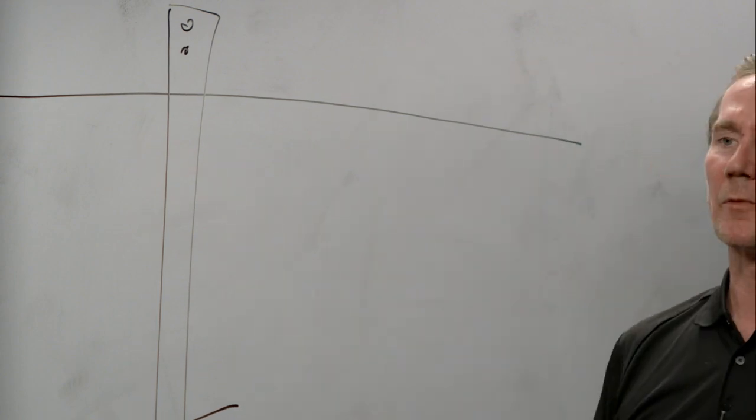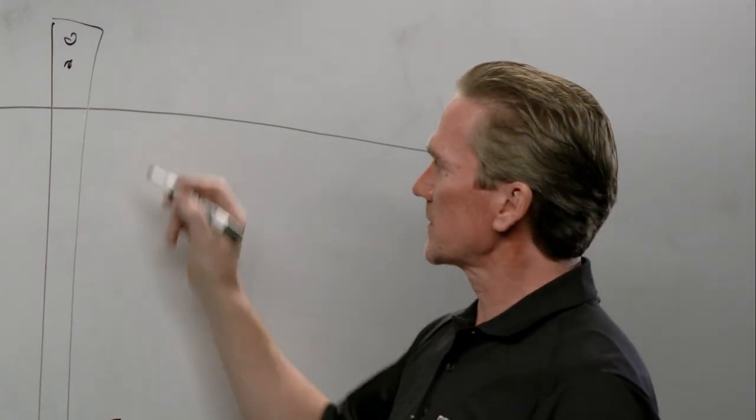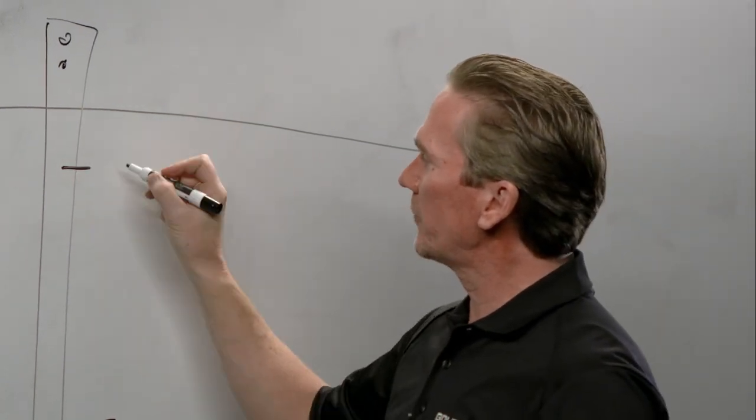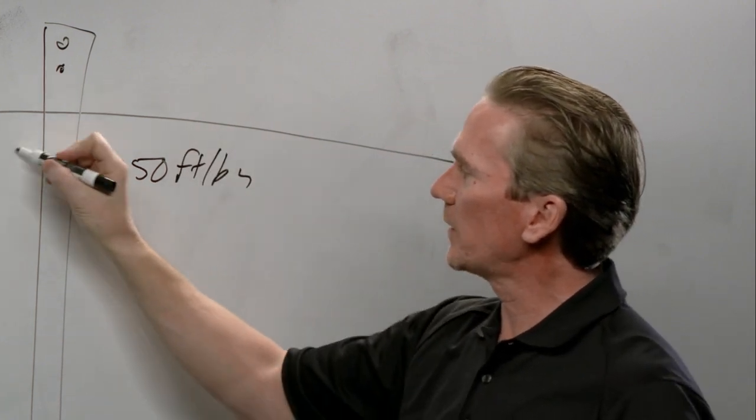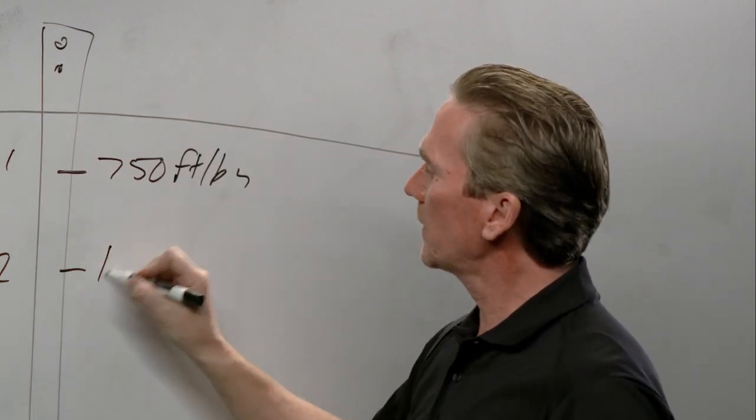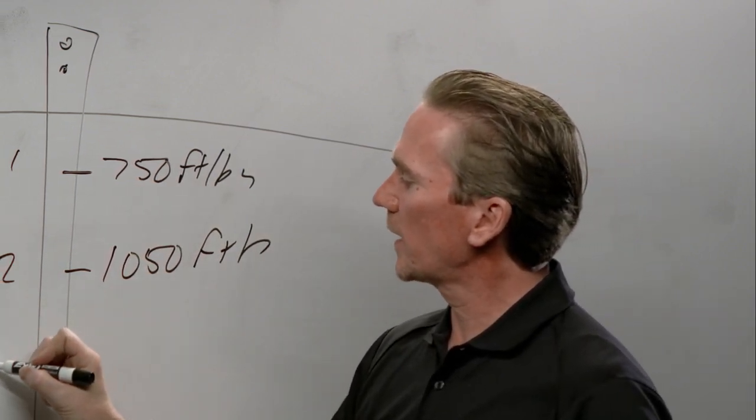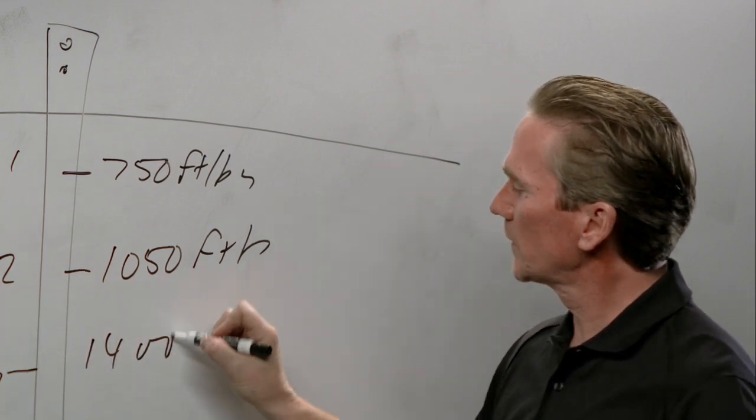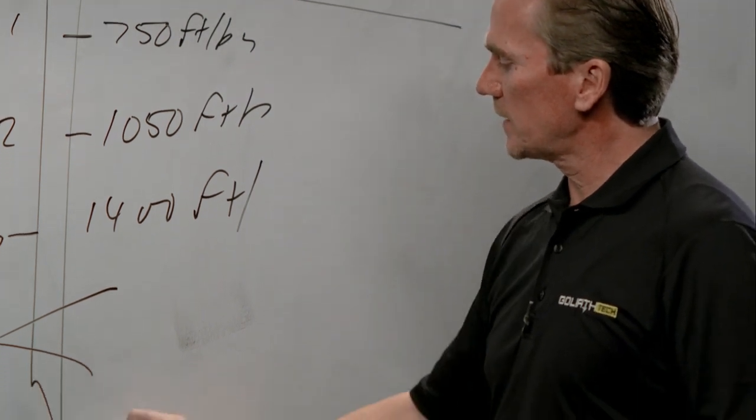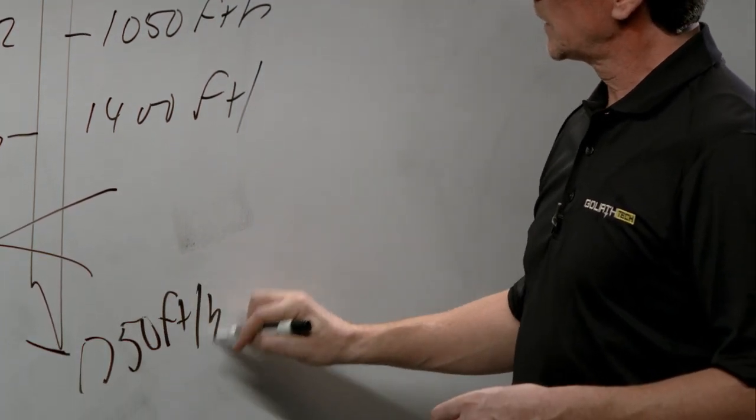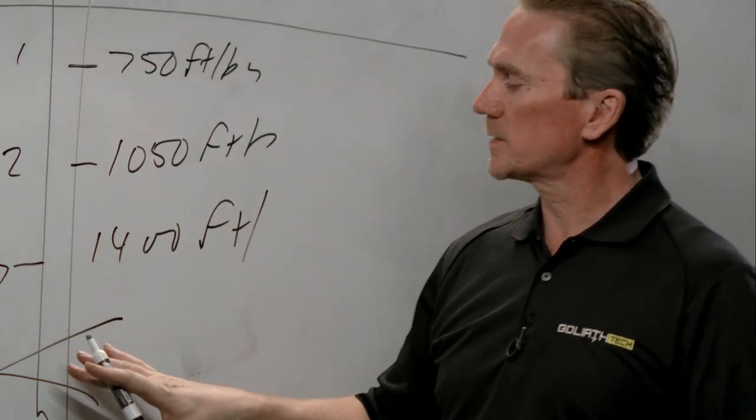For instance, at one foot we had 750 foot-pounds of torque resistance. At two feet we had 1,050 foot-pounds of torque resistance. At three feet we had 1,400, and finally we had 1,750 final.